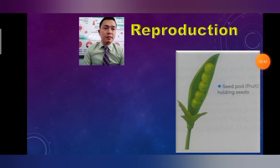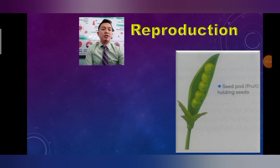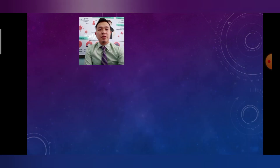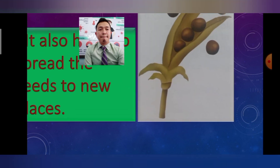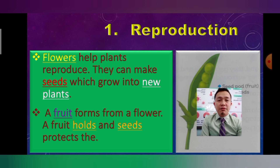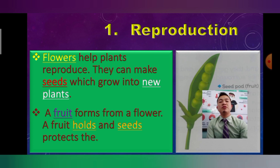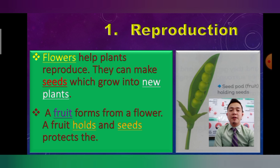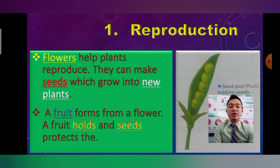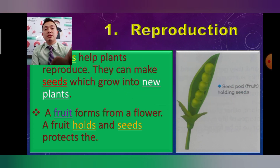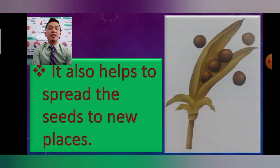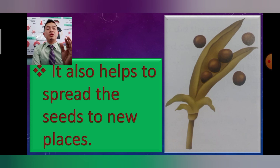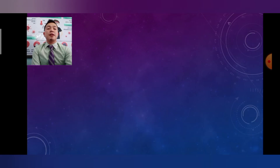Now let's talk about reproduction of the plant. This slide shows the fruit, the seed bud, or the fruit holding seeds. Flowers help plants reproduce — they can make new seeds which grow into new plants. A fruit forms from a flower; a fruit holds and protects the seeds. It also helps spread the seeds to new places.